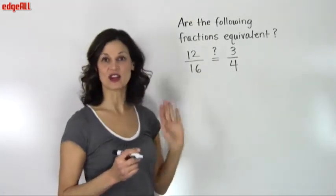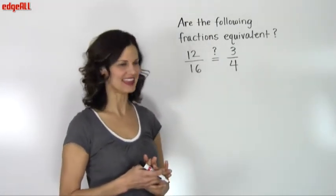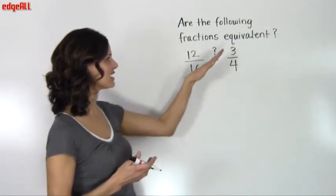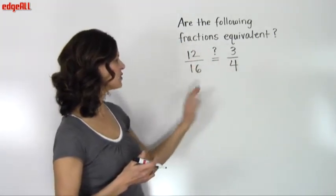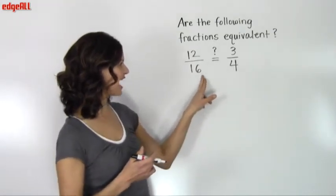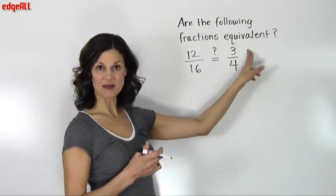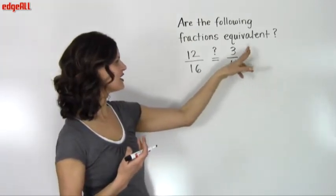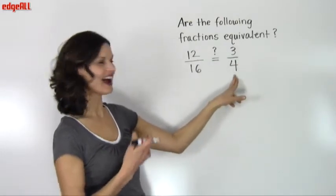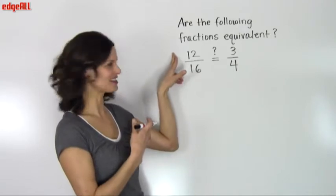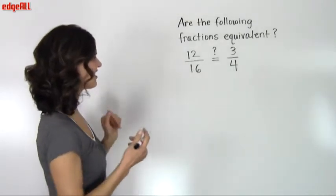What we are going to do in the cross multiplication method is our first step is to cross multiply. What you do is multiply the denominator from one fraction with the numerator from the other fraction. And then similarly, you multiply the denominator of the other fraction with the numerator from the first fraction. So let's get started on doing this.